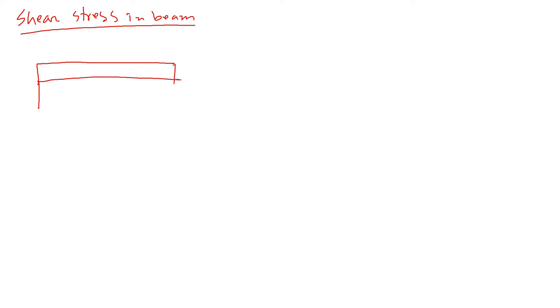Imagine that we have a section 2 by 4 like this, and it is simply supported with two reaction forces at the corners. Then we have a force P applied. So the beam looks like this — that's the 2 by 4 cross section.